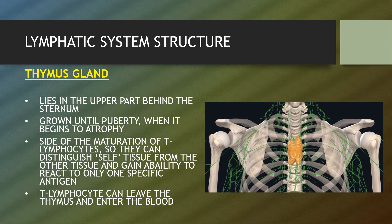The thymus gland, located behind your sternum and between your lungs, is only active until puberty. After puberty, the thymus starts to slowly shrink and become replaced by fat. Thymosin is the hormone of the thymus and it stimulates the development of disease-fighting T cells. The thymus gland helps the body protect itself against autoimmunity, which occurs when the immune system turns against itself. Therefore, the thymus plays a vital role in the lymphatic system — your body's defence network — and the endocrine system. T lymphocytes can leave the thymus and enter the blood.